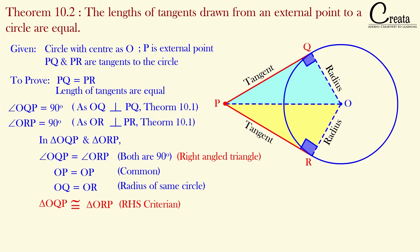So can we say both triangles are congruent to each other by the RHS congruency rule? Both triangles are right-angle triangles, and the hypotenuse of both triangles are equal — OP is the hypotenuse in both triangles, since the hypotenuse is the side opposite to the 90-degree angle. Angle Q and angle R are both 90 degrees, and the side opposite to both is OP. One other side, OQ and OR, are also equal. That is the RHS criteria: right angle, equal hypotenuse, and one equal side. By RHS rule, both triangles are congruent.